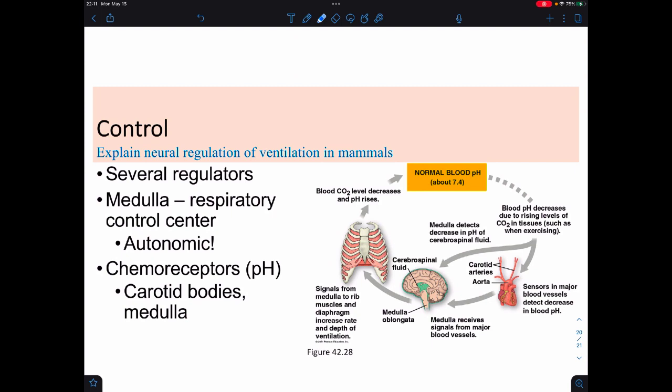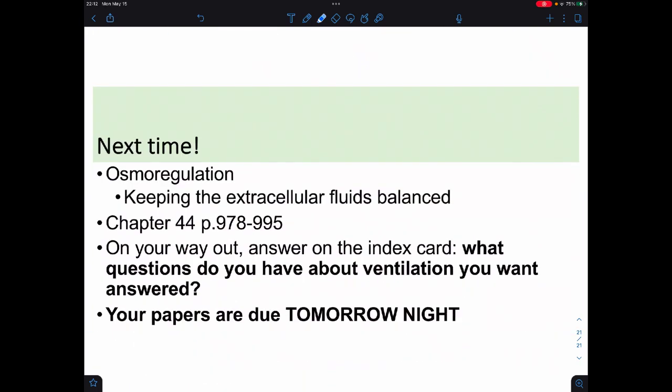Regulation of ventilation happens through a whole bunch of things. One of them is medulla so in there we happen to have a respiratory control center and it's autonomic. We turn out to be passive breathers. We aren't aware that we're breathing but if you were like a marine mammal you kind of control when you breathe because you don't want to suddenly start huffing water when you're 200 meters below. We also use chemoreceptors that detect pH inside your carotid bodies and your medulla and they will force you to breathe. Next time we're going to look at osmoregulation. Thank you.